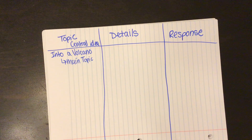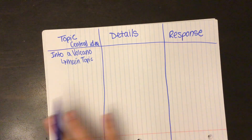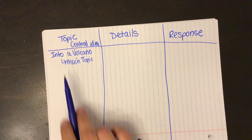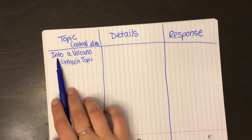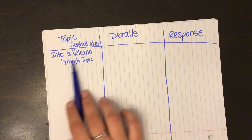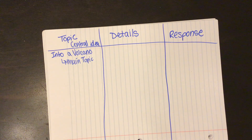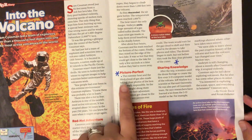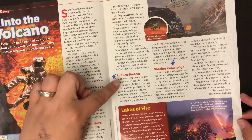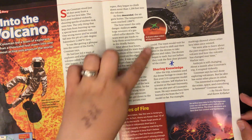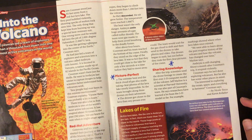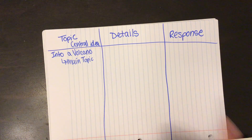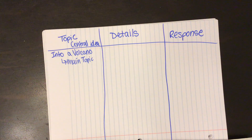So your directions one more time, just in case: you're going to draw this graphic organizer. We're going to read the section. We're going to talk about Into a Volcano, which is our main topic, but the section you are going to focus on today is Picture Perfect. It has two paragraphs. You're going to read this, come up with your central idea and the details to support it, put that into your graphic organizer, and upload a picture into Canvas.